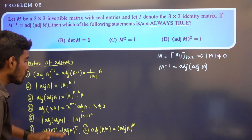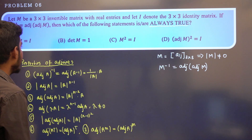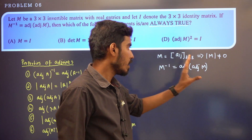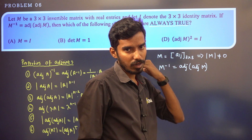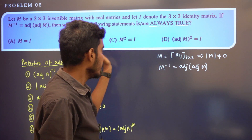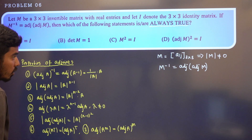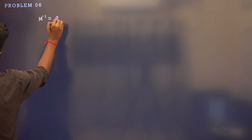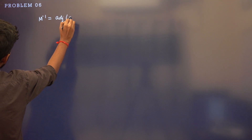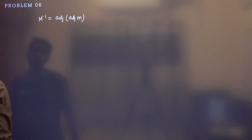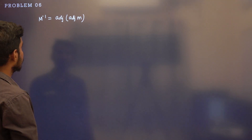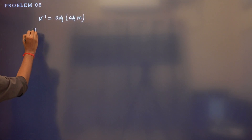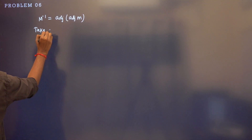Now I am going to list out the 7 important properties. M is a 3x3 invertible matrix. M inverse of M is equal — this is always true. So let's take the determinant on both sides.